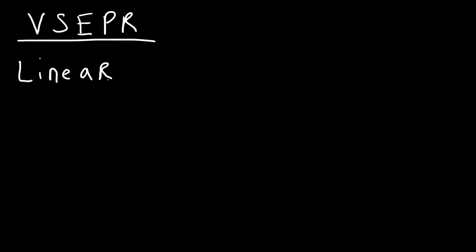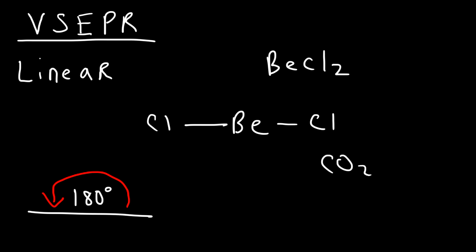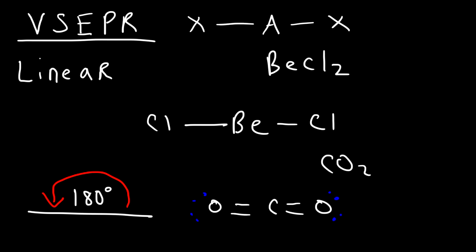The first type of geometry you need to be familiar with is the linear molecular geometry. Molecules that have this shape include BeCl2, which is beryllium chloride. As you can see, it looks like one straight line, and the angle of a straight line is 180 degrees. That's the bond angle of a molecule with a linear geometry. Carbon dioxide is another molecule with a linear geometry. Any molecule where you have an atom at the center and two other atoms on the sides is a linear molecule.